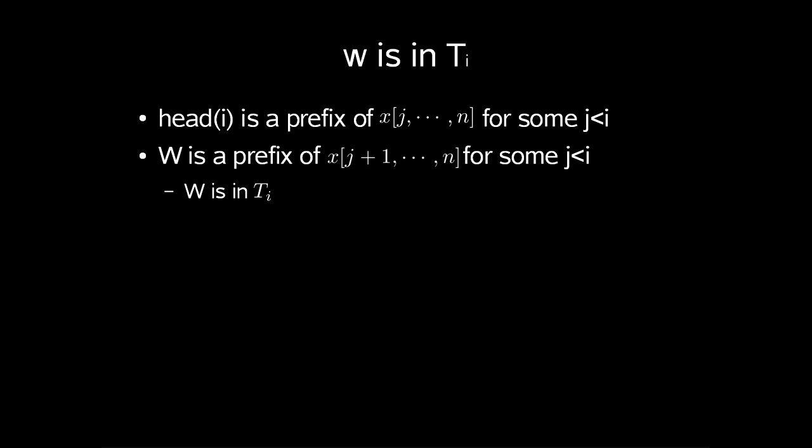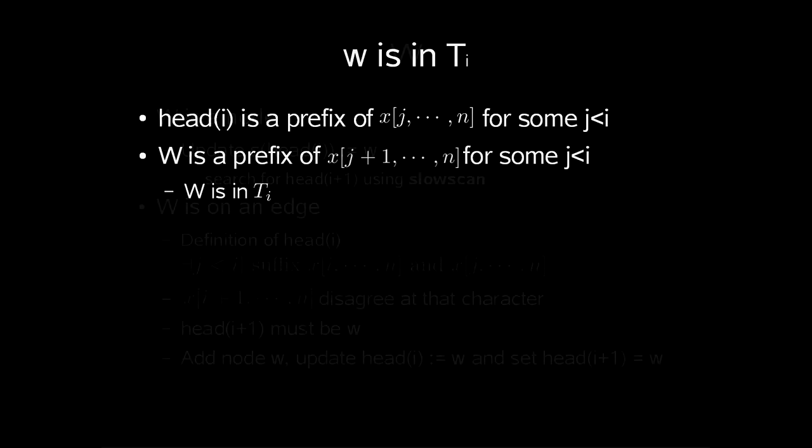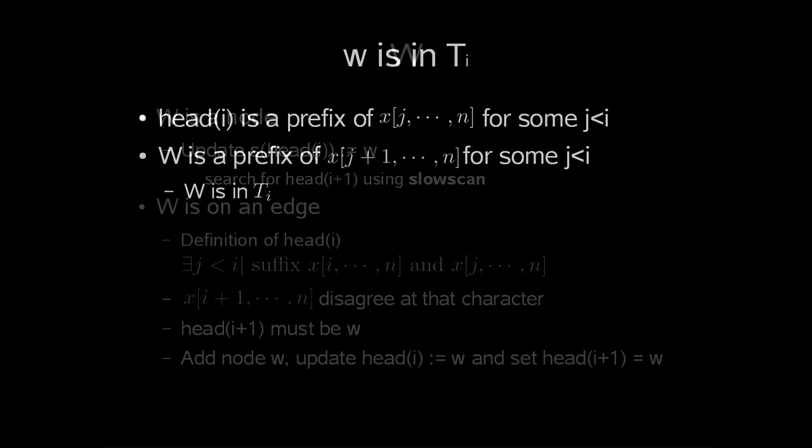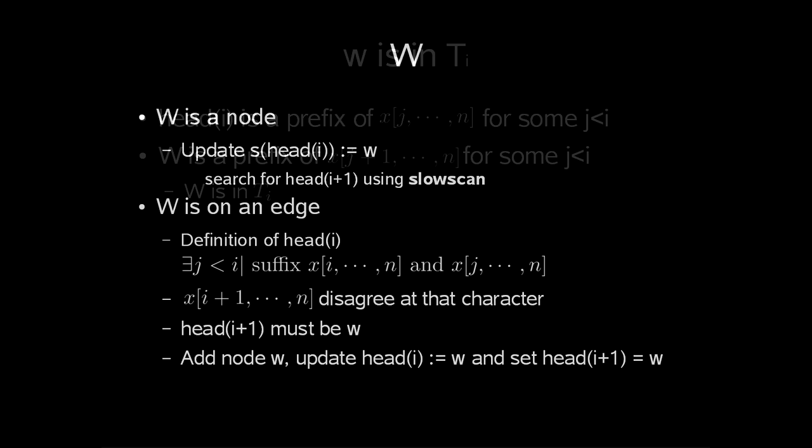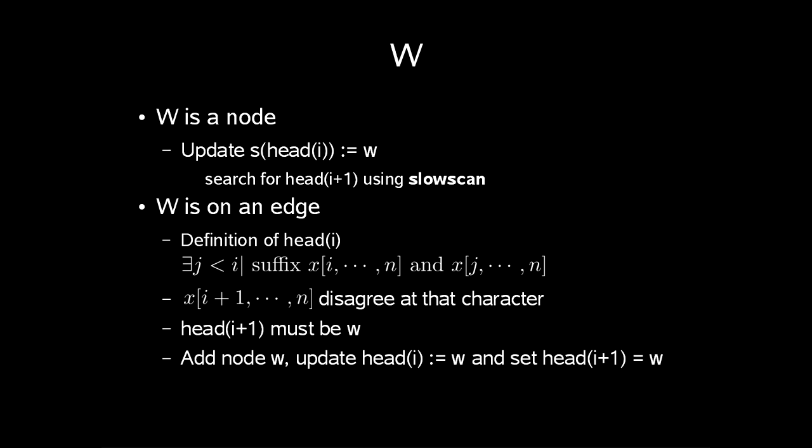Head(i) is a prefix of x[j...n] for some j less than i. Thus, w is a prefix of x[j+1...n] for some j less than i. So in this example, w is a prefix of some suffix j less than or equal to i. So w is in t(i). Consequently, what this means is that we can search for w from s(u) using fast scan.